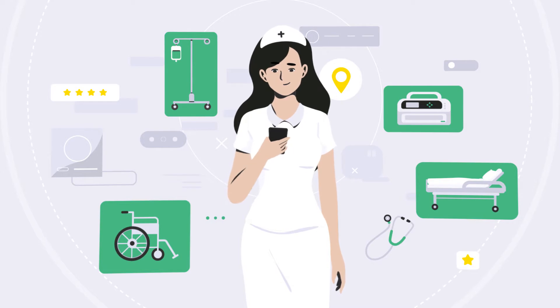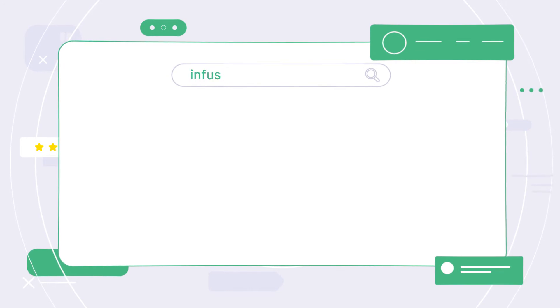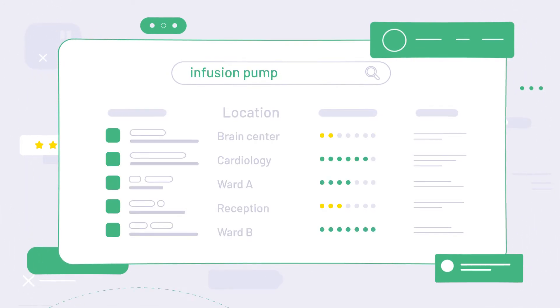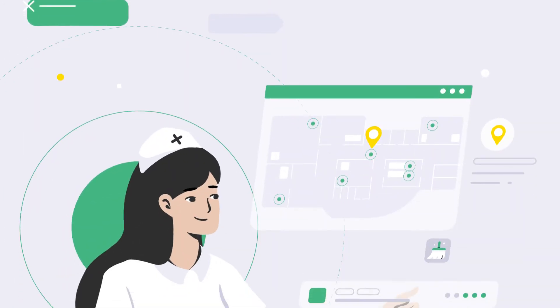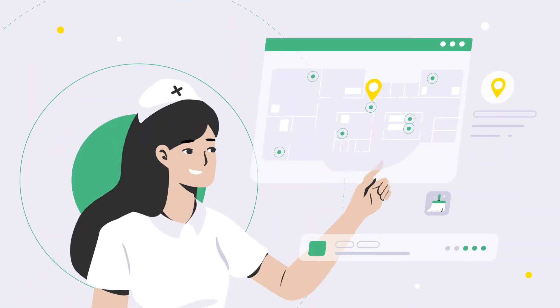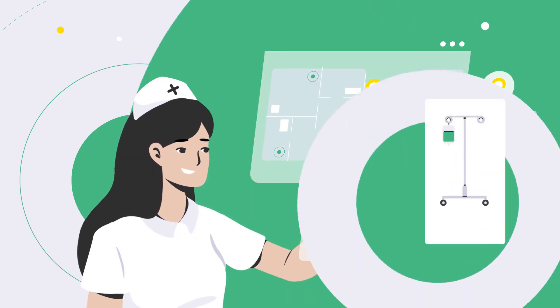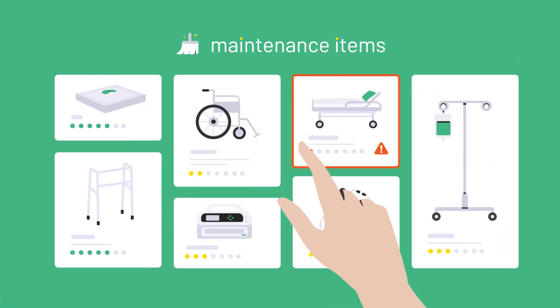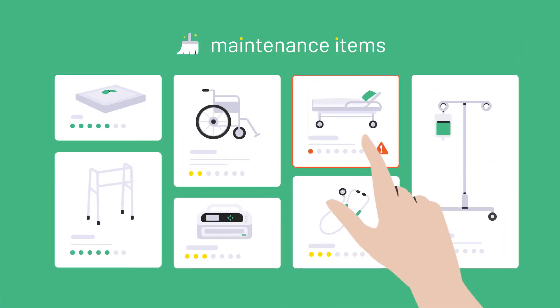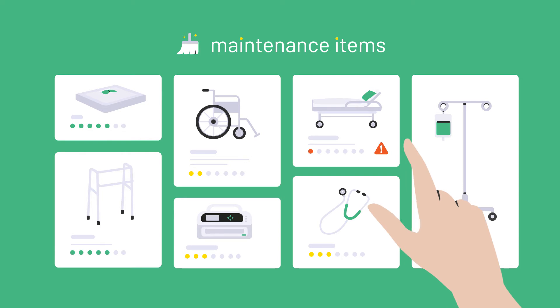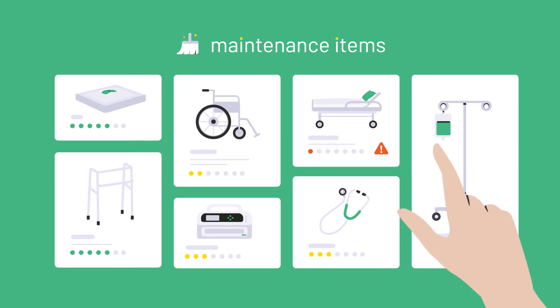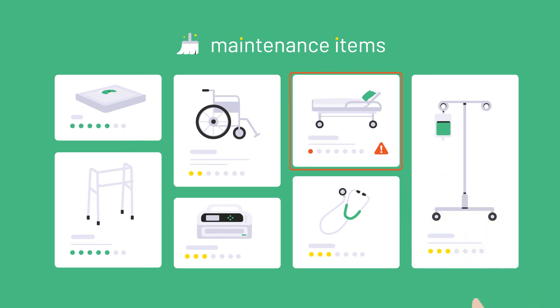Such as wheelchairs, beds, and other movable devices. Our system is simple to use — search for any item quickly and easily. Beacon also collects and stores data on usage history for smarter maintenance, reducing asset downtime and increasing utilization rate.